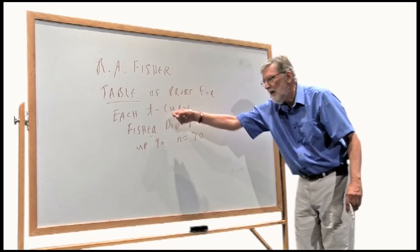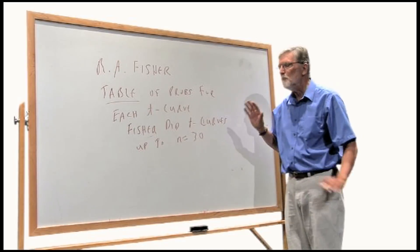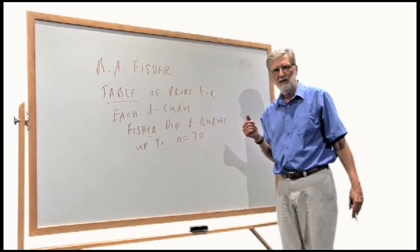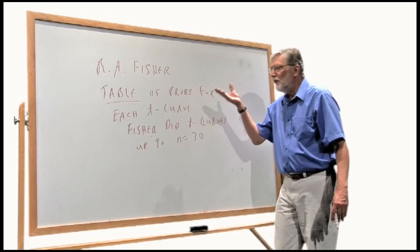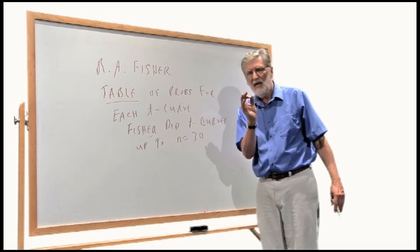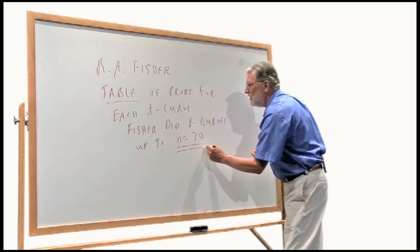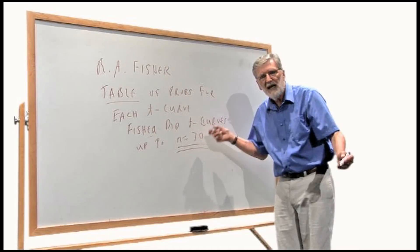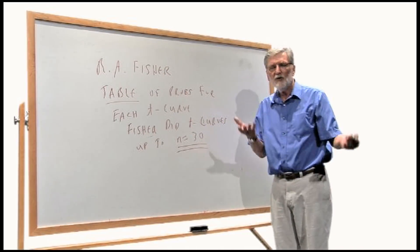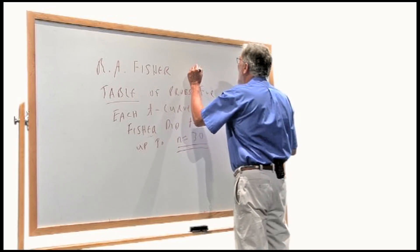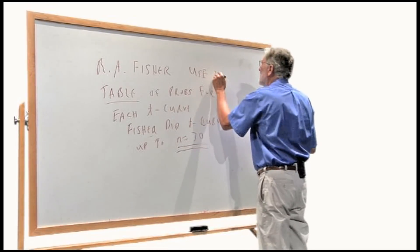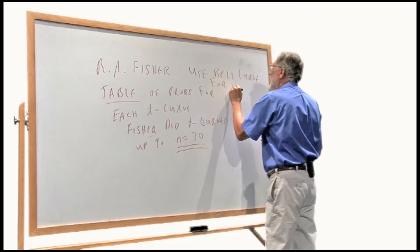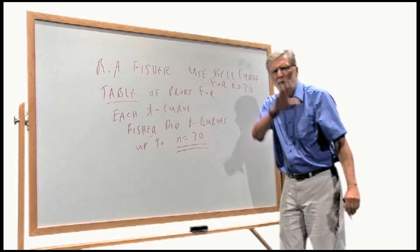He made these curves one after the other, and it's laborious, it's hard work. And then he got tired. He had other things to do — he was a serious person. So he quit. So the disciples came to Fisher and said, 'But Master, what should we do if the sample size is bigger than 30, but not much bigger than 30?' And Fisher, who just didn't want to be bothered, said, 'Oh, use the bell curve for bigger than 30. Don't bother me.'